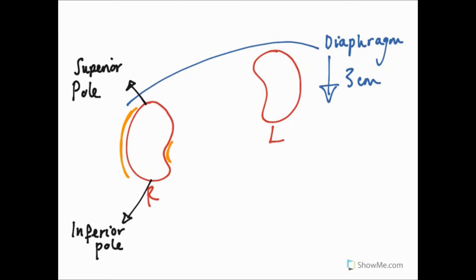At the concave medial border is the hilum of the kidney and this is where the renal artery enters and the renal vein and ureters emerge.